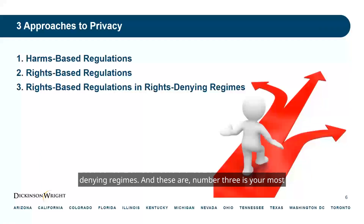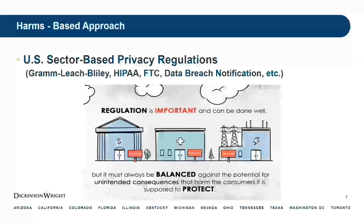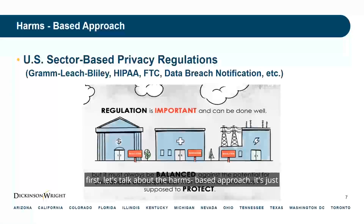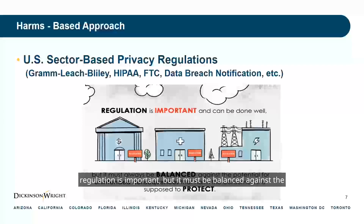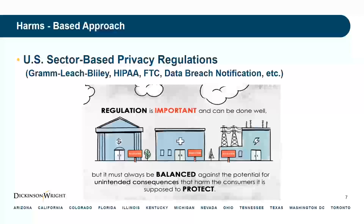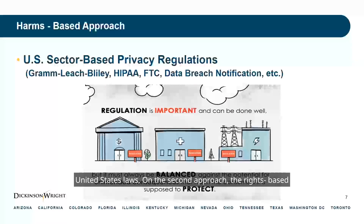The third is the most aggressive form of data privacy that we'll cover today. First, let's talk about the harms-based approach. It's just as it suggests — we look at the harm and we build the regulations based upon the potential harms. Essentially, the approach is that regulation is important, but it must be balanced against the potential harms and consequences to consumers and to the public. We see this particular approach in a lot of United States laws.